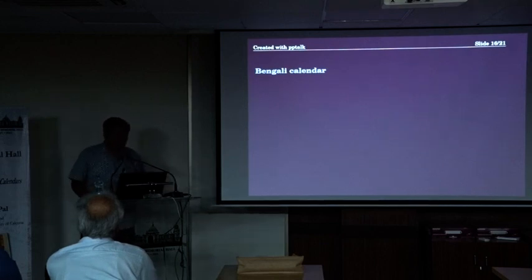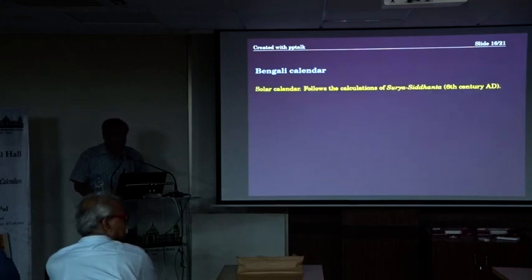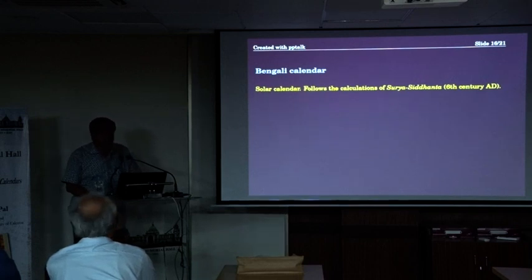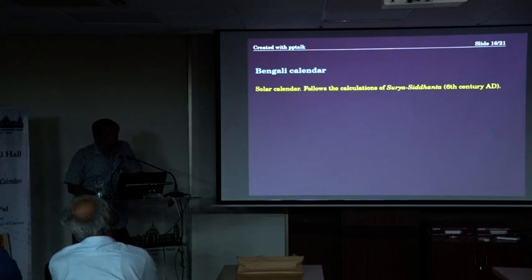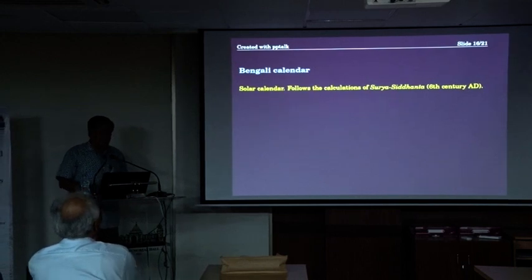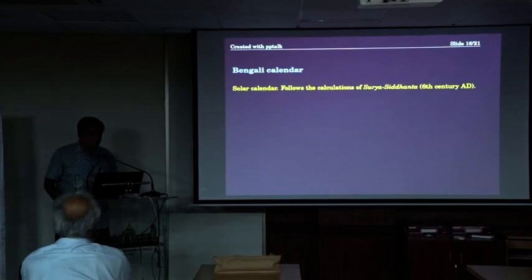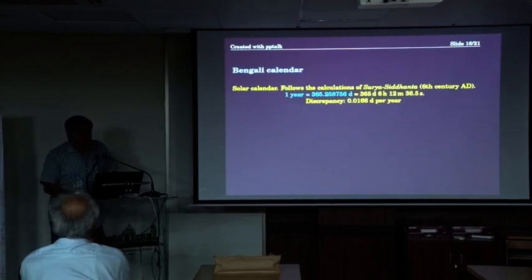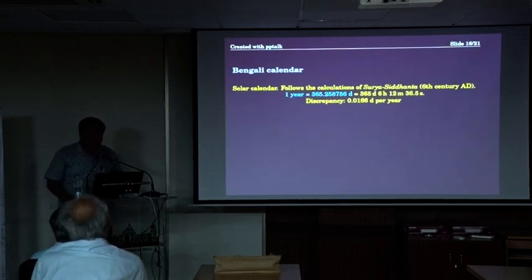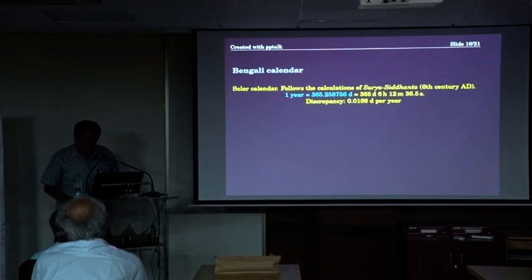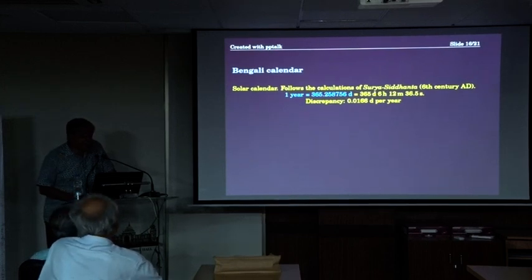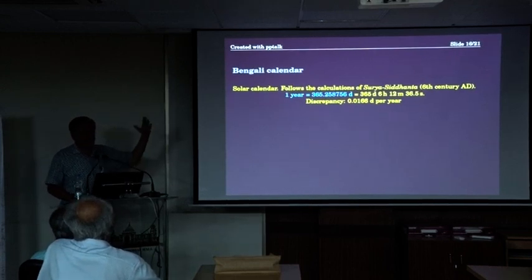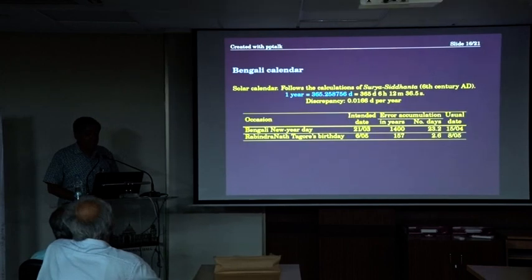Now, I have to talk about the Bengali calendar. The Bengali calendar is not a lunisolar calendar like most of India — as I mentioned in the beginning — it's a solar calendar. It follows the calculations of the astronomical text called the Surya Siddhanta, written in the 6th century AD. According to the Surya Siddhanta, the length of the year is 365.258756 days — that is 365 days, 6 hours, 12 minutes, etc. — compared to the actual 5 hours, 48 minutes. So there is a discrepancy, and it accumulates.